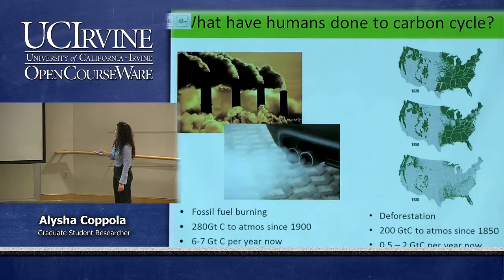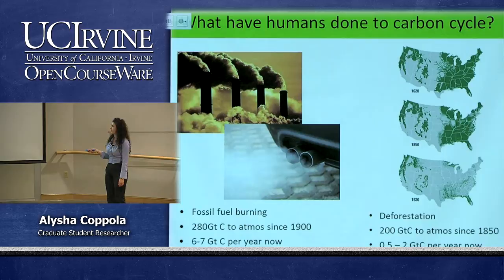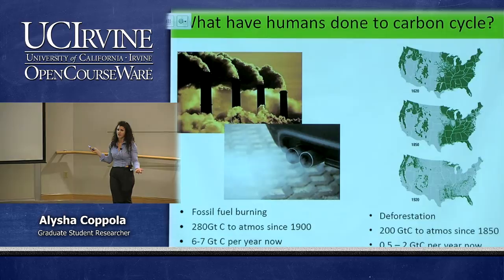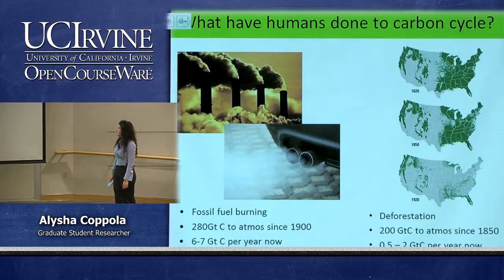What have humans done to the carbon cycle? We've increased the amount of carbon in the atmosphere by adding 280 billion tons of carbon since 1990, and we now add 6 to 7 billion tons of carbon per year. We've also changed land use through deforestation — in 1620 there were more forests in the US than since the 1920s when we started changing land use with crops. Deforestation has released 200 billion tons of carbon since 1850 into the atmosphere.